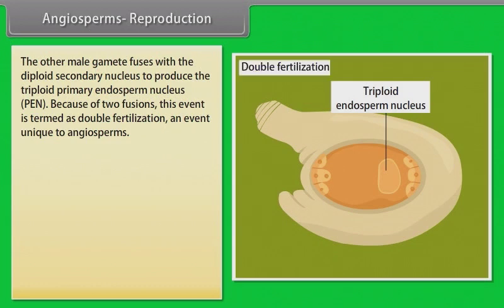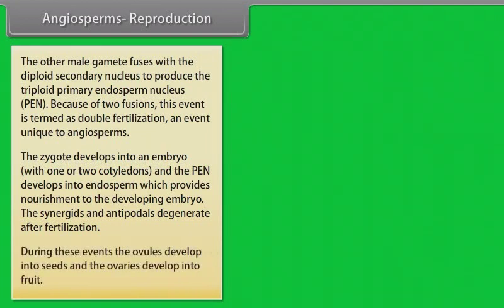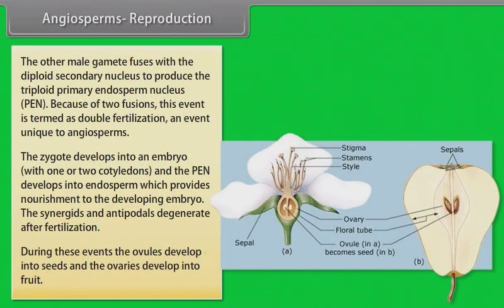The zygote develops into an embryo with one or two cotyledons and the PEN develops into endosperm which provides nourishment to the developing embryo. The synergids and antipodals degenerate after fertilization. During these events, the ovules develop into seeds and the ovaries develop into fruit.